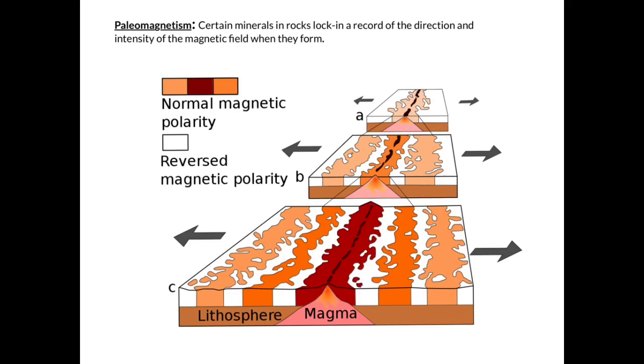An example of a rock at the ocean floor that does this is basalt, which is forming right there at the mid-ocean ridge. Basalt is an igneous rock and it records traces of the magnetic signature from when it first crystallized.